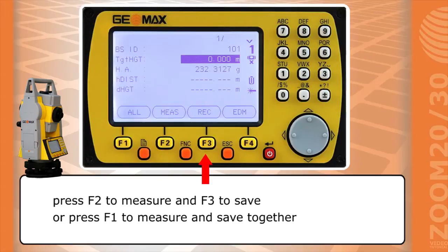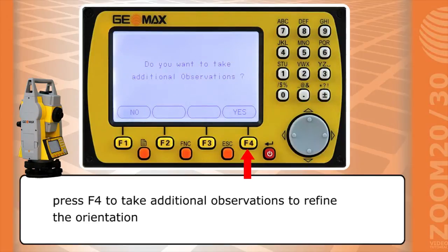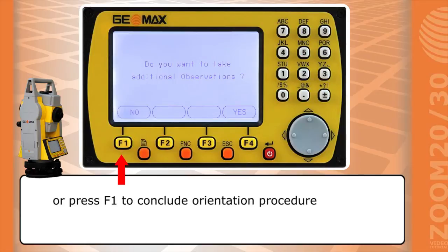Press F2 to measure and F3 to save, or press F1 to measure and save together. Press F4 to take additional observations to refine the orientation, or press F1 to conclude orientation procedure.